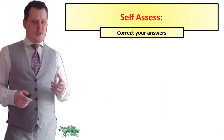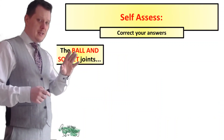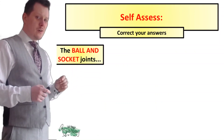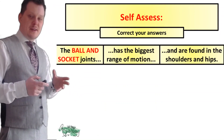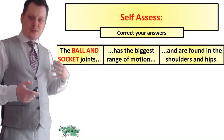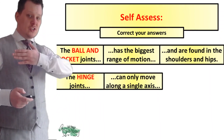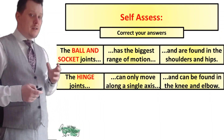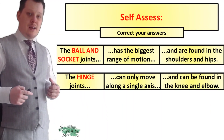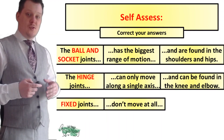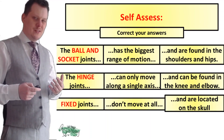Correct your own answers and make any corrections. The ball and socket joint has the largest range of motion and is found in the shoulders and the hips. Hinge joints can only move along a single axis and can be found in the knee and the elbow. Fixed joints don't move at all and are located on the skull.